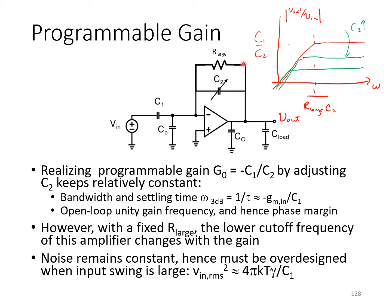The noise contribution of R_large is insignificant compared to the thermal noise of the op-amp itself. So, the input-referred noise of this circuit is 4πkTγ over C1, just as it is for the circuit without R_large. So, if we're changing the gain by playing with C2, the input-referred noise stays the same.